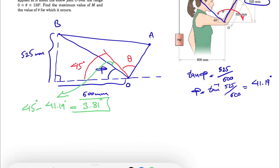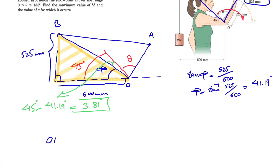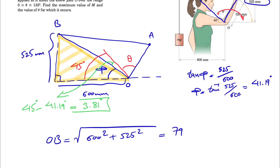Using the right triangle highlighted in yellow and the Pythagorean theorem, we find OB = √(600² + 525²) = 797.26 mm. We also know from the problem that OA = 325 mm.